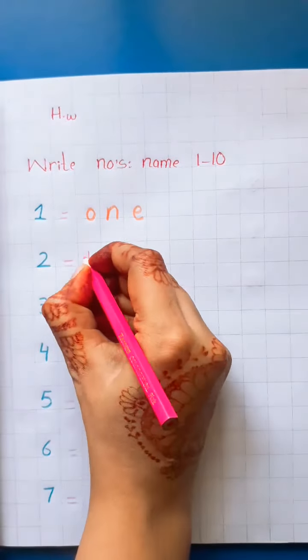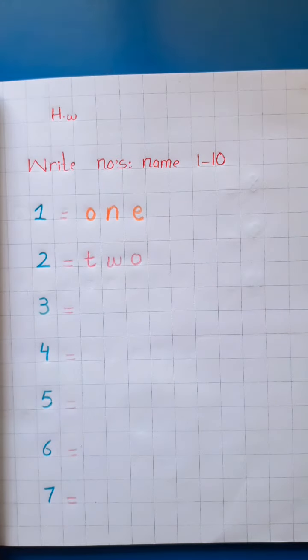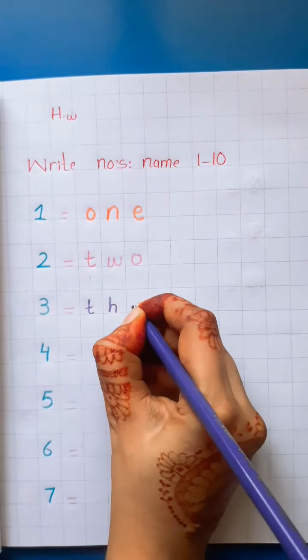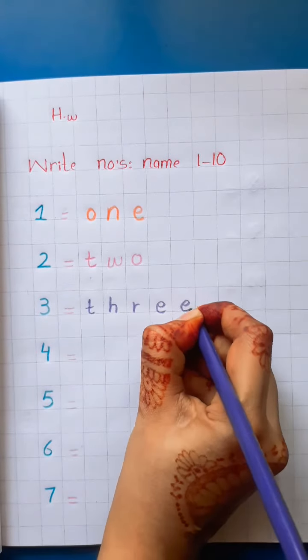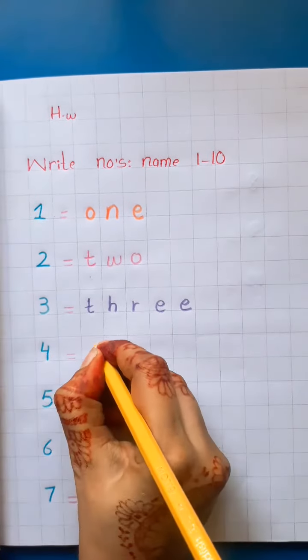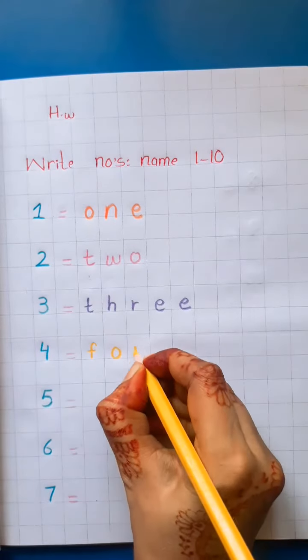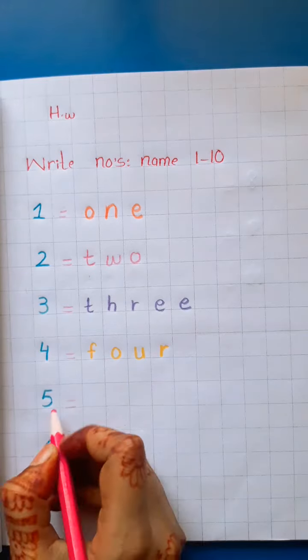Two. T-W-O. Two. Three. What's the spell of three? T-H-R-E-E. Three. T-H-R-E-E. Three. Four. F-O-U-R. Four. Five. What's the spell of five?